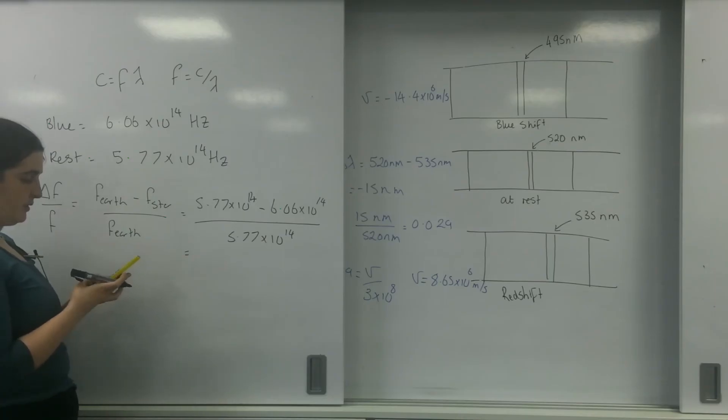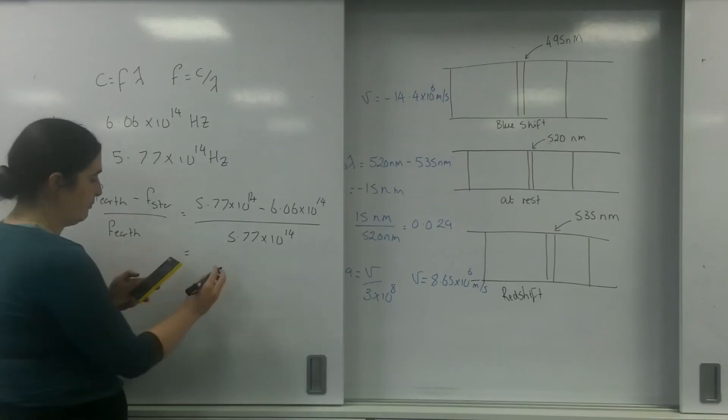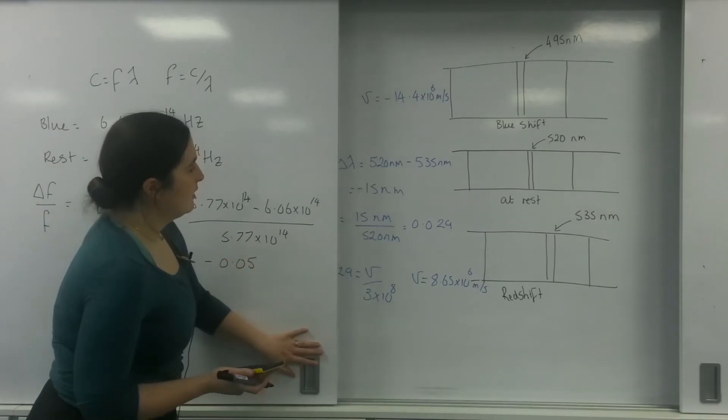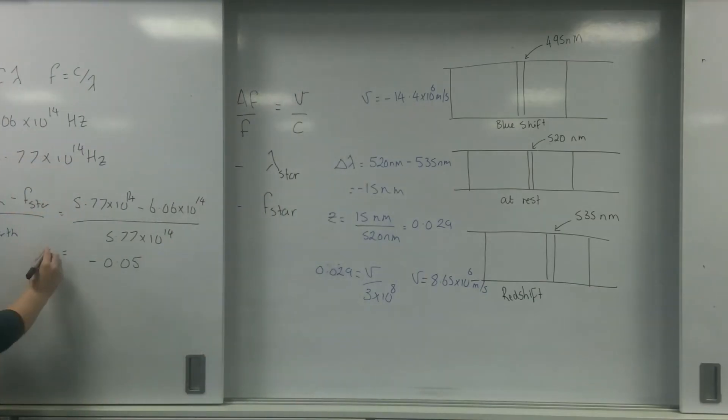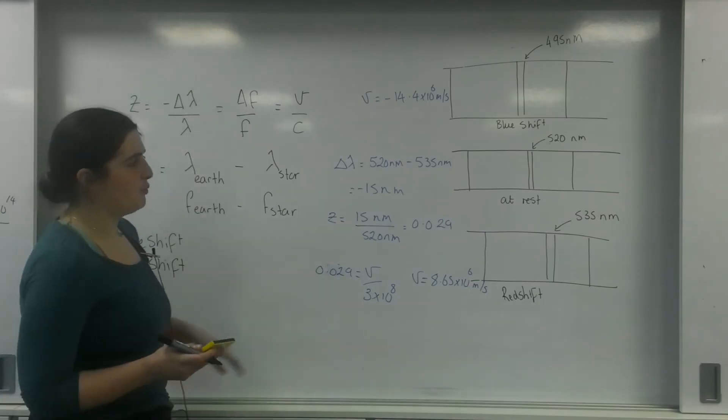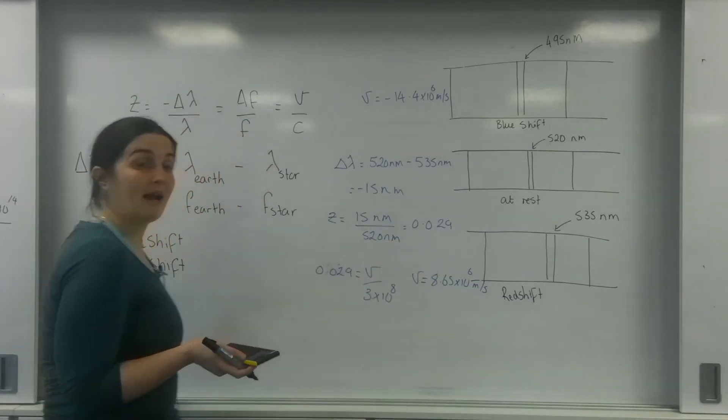And that equals minus 0.05. So that's my answer for my Doppler shift is minus 0.05. And I believe what we had here was 0.048. So we're rounding.